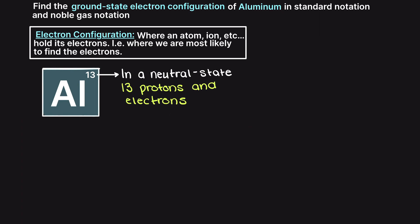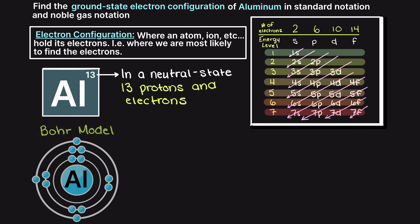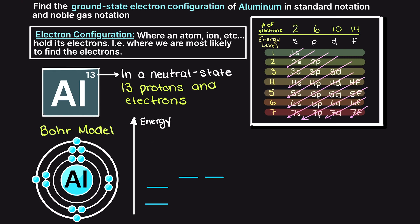Let's also remember that in the past video we talked about this handy device for remembering which orbitals have the lowest energy, as those are the orbitals that are going to get filled first. I wrote the Bohr model of aluminum here to help us keep track of our 13 electrons as we place them into our electron energy level diagram. So let's start by placing our electrons from the lowest energy state to the highest energy state as shown by our diagram above.